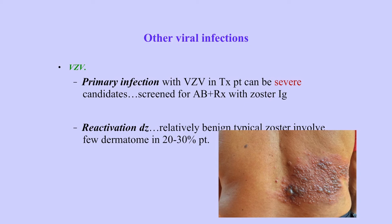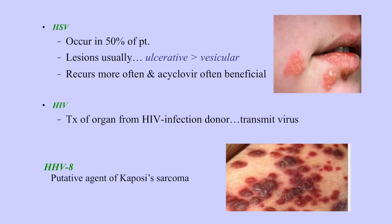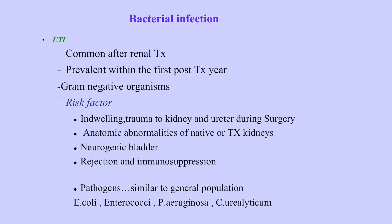Herpes simplex can present with ulcerative or vesicular rash. Another viral-related disease is Kaposi's sarcoma, associated with HHV-8 — you can see those purple plaques. Among bacterial infections, UTIs are very common, prevalent in the first year post-transplant. The pathogens are similar to the general population: E. coli, Enterococcus, Pseudomonas. UTIs are related to both surgical trauma and other factors like neurogenic bladder and anatomic abnormalities if they have a stent.